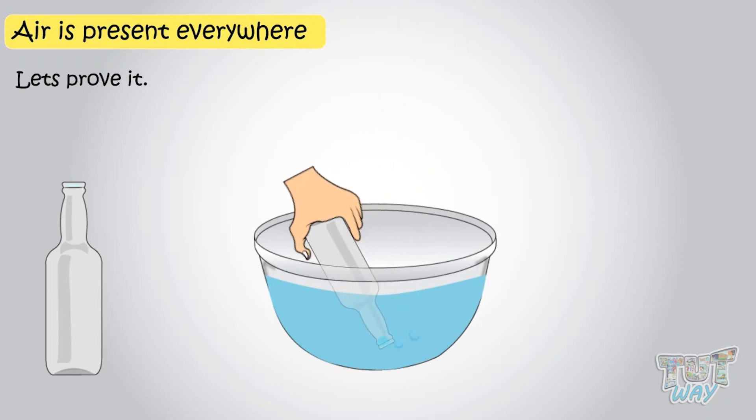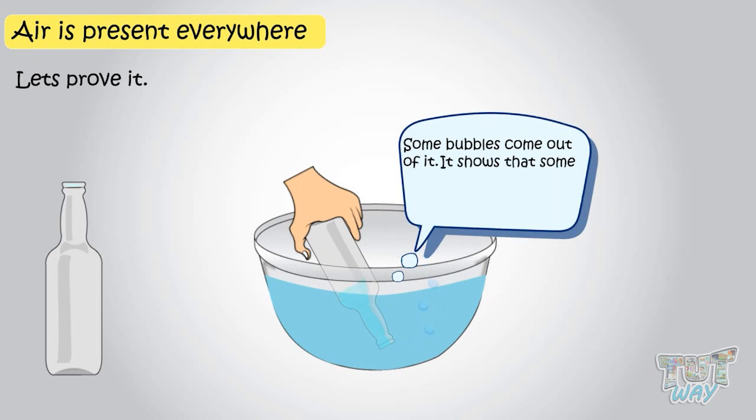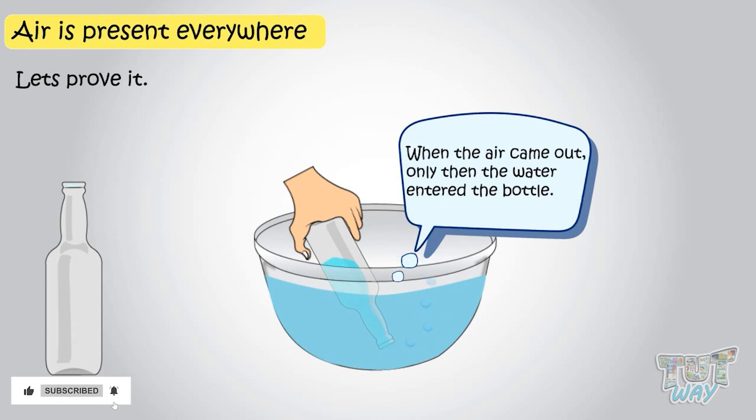Now, tilt the bottle slightly. What do you observe? A bubbly sound, or some bubbles coming out of it. It shows that some air was there in the bottle, which came out. And when the air came out, only then the water enters the bottle.